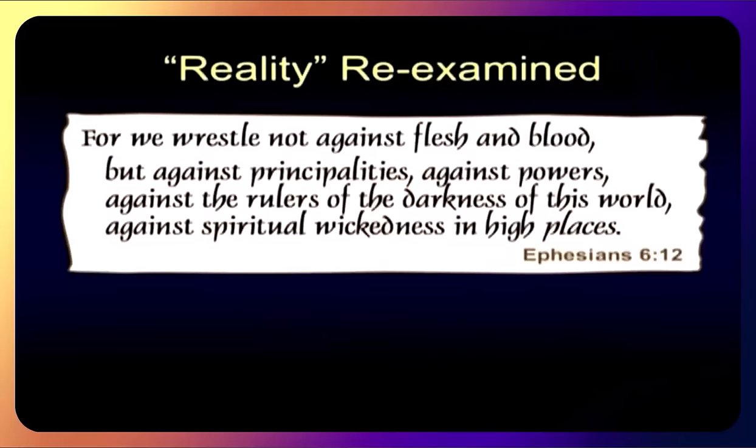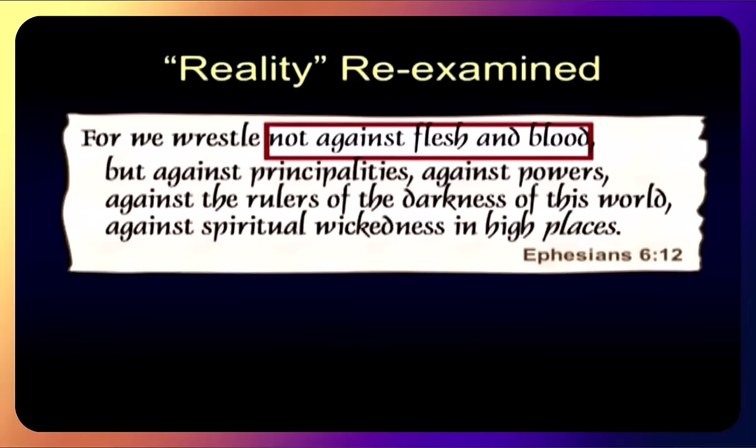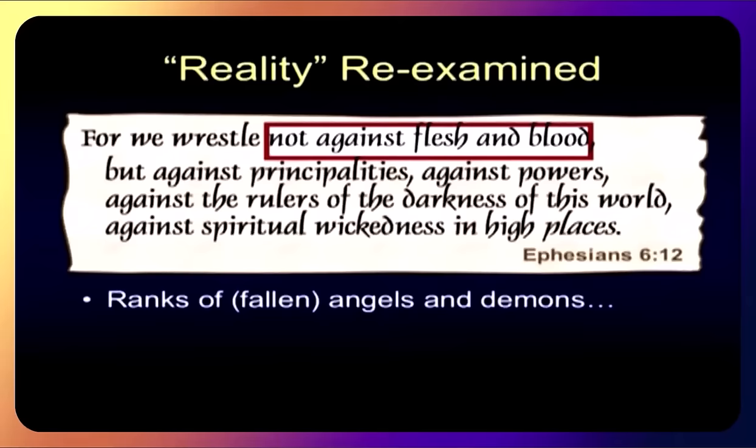We'll use our springboard, verse 12 of chapter 6 of Ephesians, where Paul tells us we wrestle not against flesh and blood, but against principalities, against powers, against rulers of darkness of this world, and spiritual wickedness in high places. That's scary stuff. We're not against flesh and blood, but we're talking here a whole list of things that are actually ranks of angels, fallen angels at that, and some of them are demons.